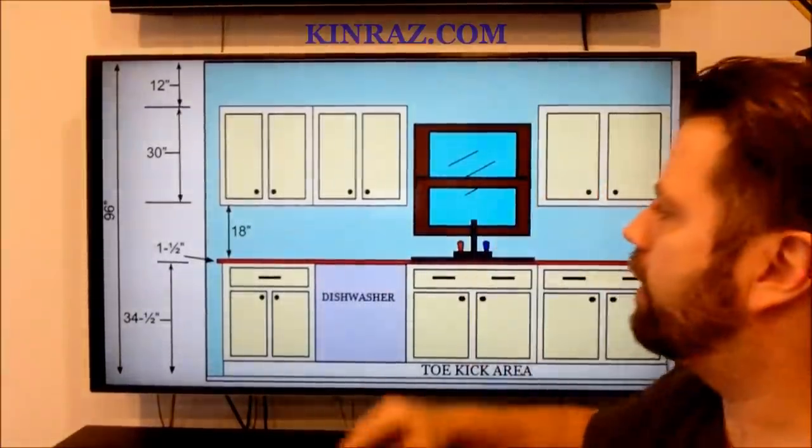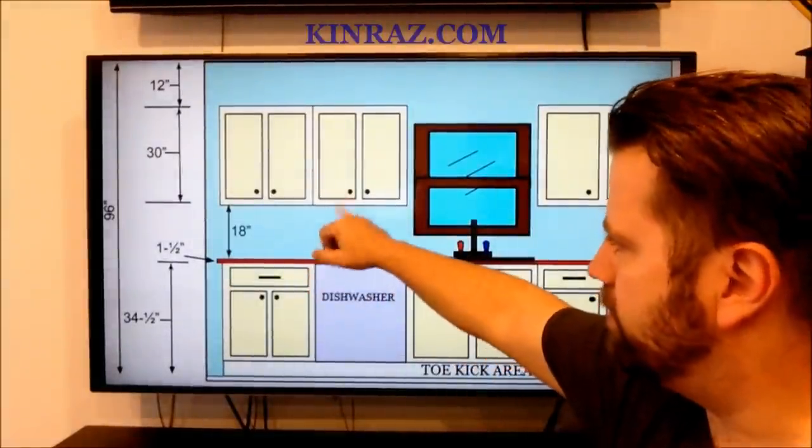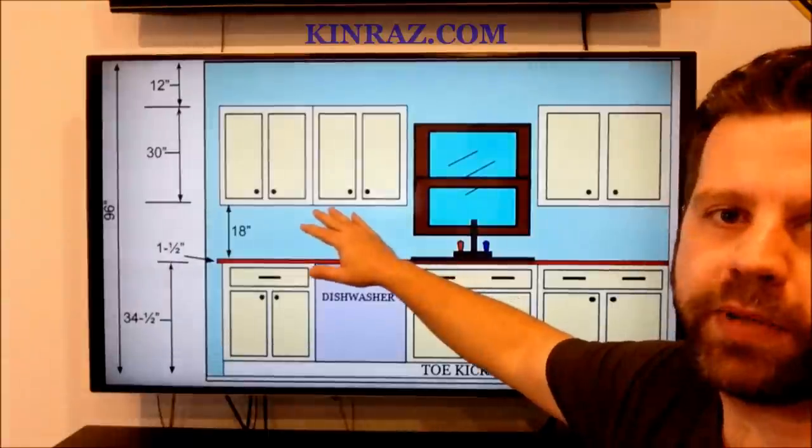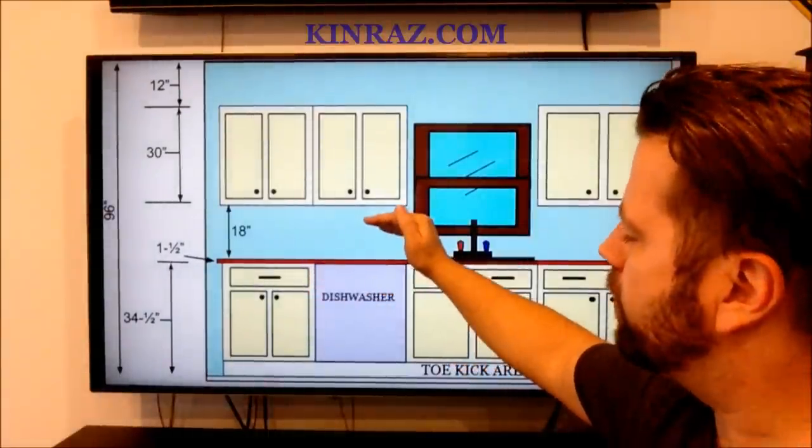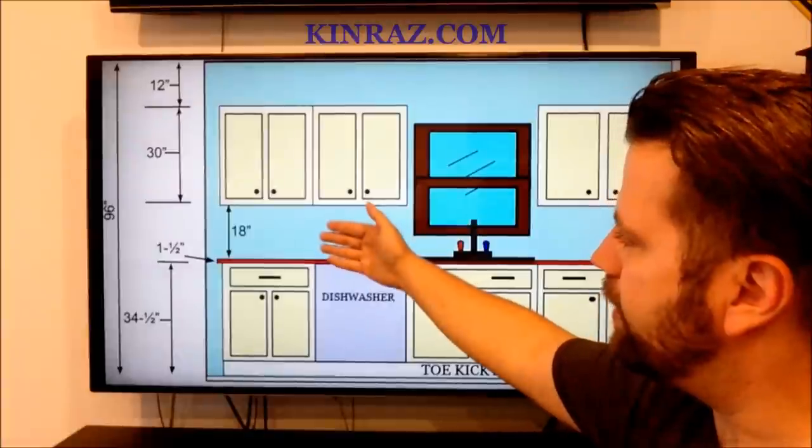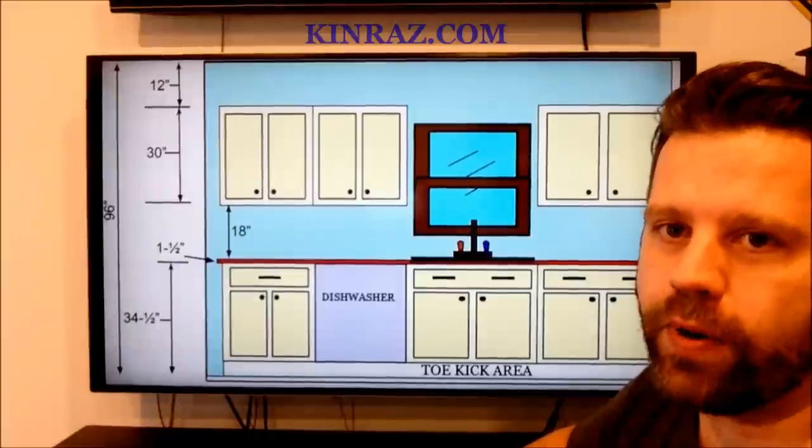Now up above your countertop you have your backsplash space. Most of the time people will run ceramic tile here and put the ceramic tile on this. So the 18 inch space is a good standard to go with.